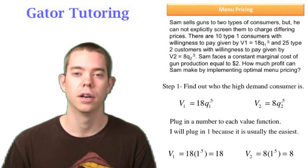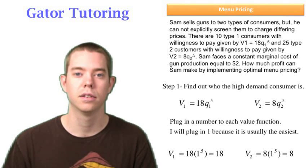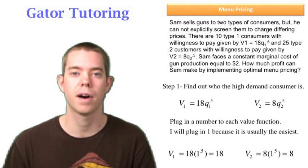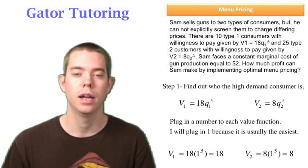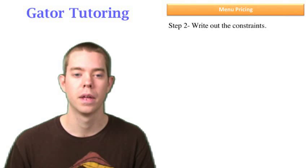So the first guy, he's the high demand consumer. There's 10 of those guys. There's 25 low demand consumers and that's V2, that's the second guy.